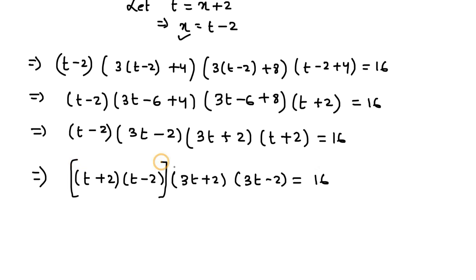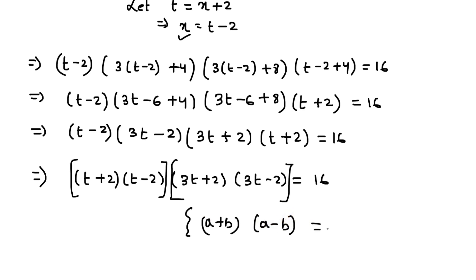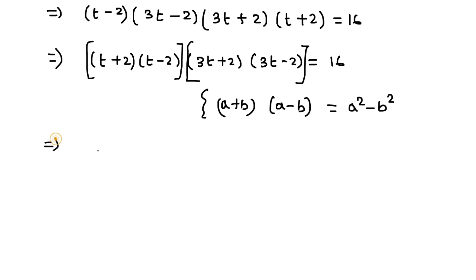Here I will apply the algebraic formula (a+b)(a-b) = a²-b². For the first pair, a=t and b=2; for the second pair, a=3t and b=2. Applying the formula, we can write (t²-4) multiplied with (9t²-4) equals 16.